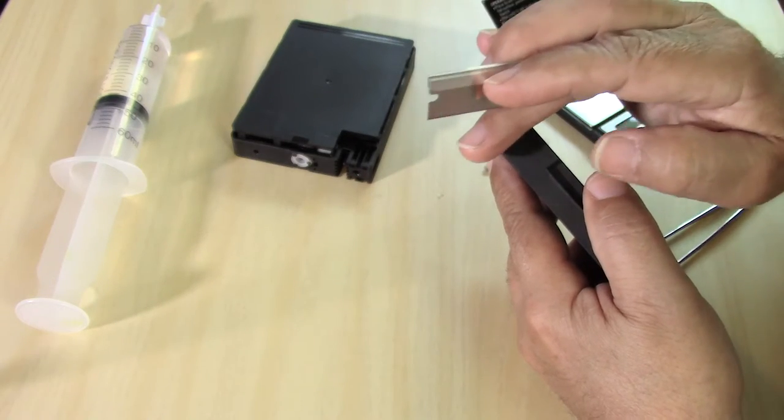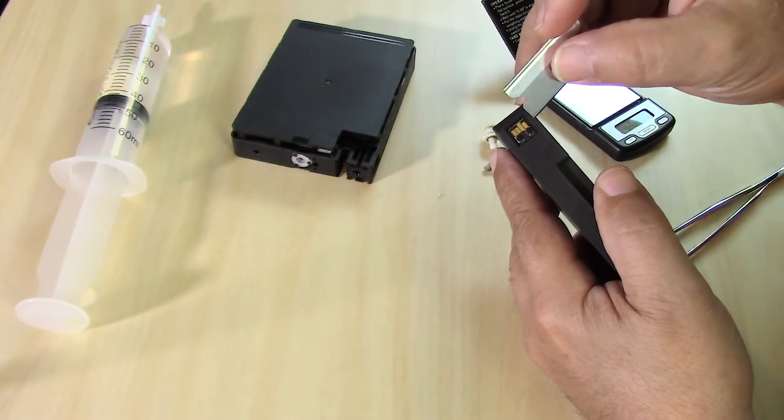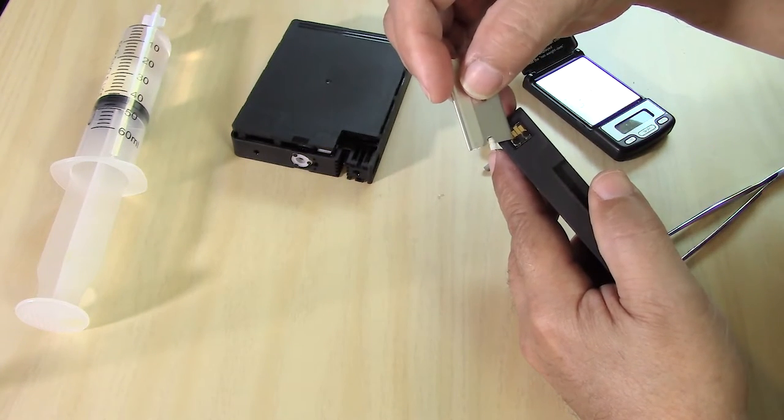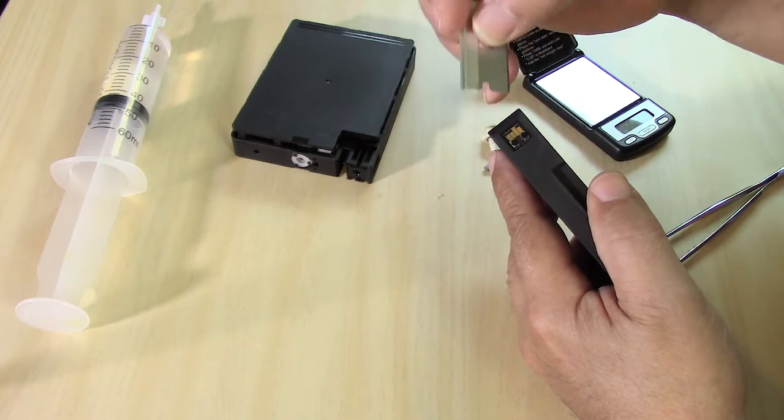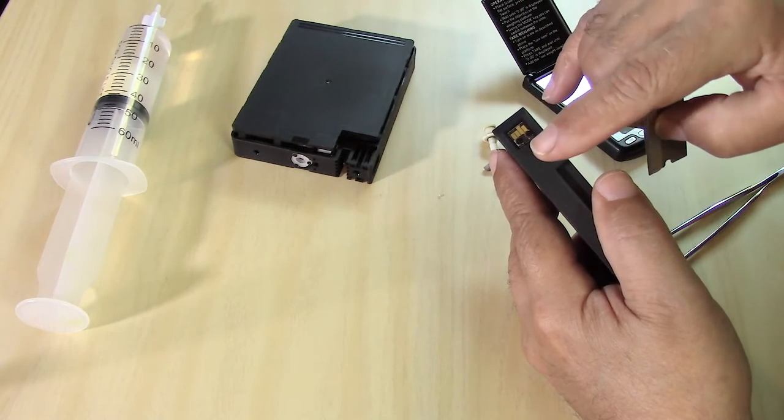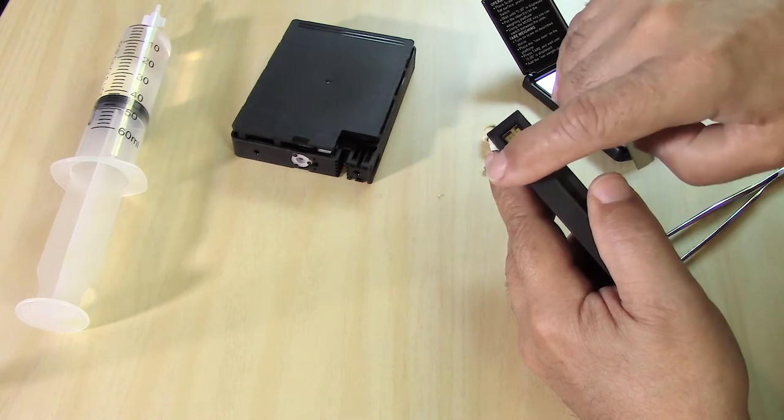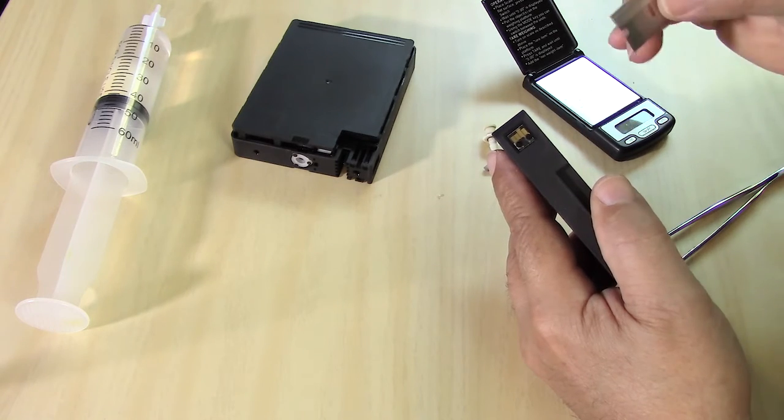The new chip will be able to be slid in and then popped back into that little post. A lot of folks will actually use a little thin strip of electrical black tape and just tape it across in order to secure the chip a little bit more. That may or may not be necessary.